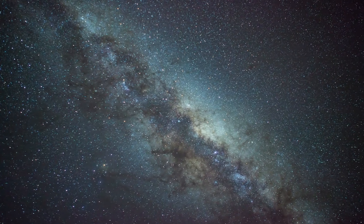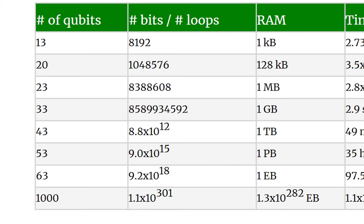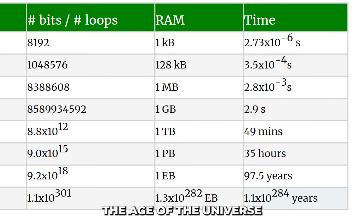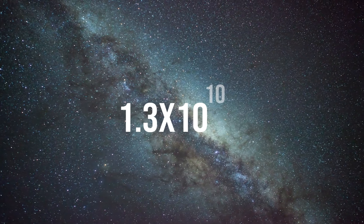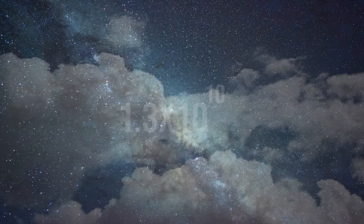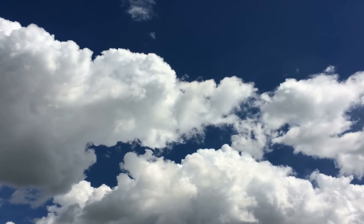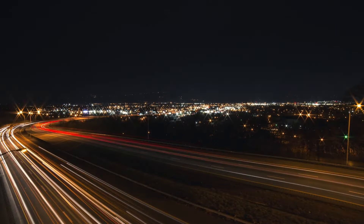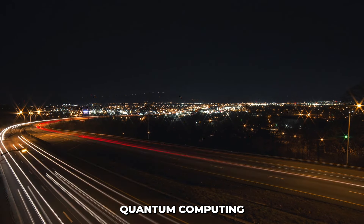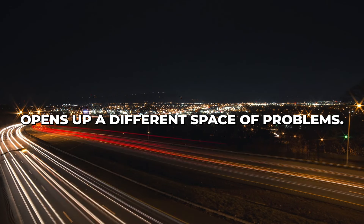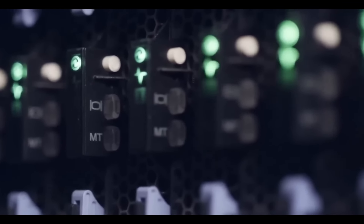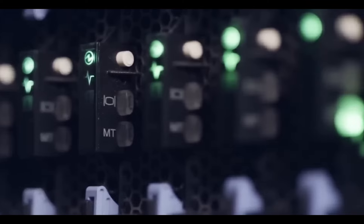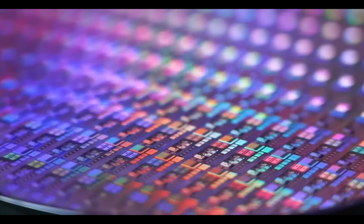Operations on 1000 qubits would take 10 to the power of 284 years to simulate. The age of the universe is estimated at 13 billion — 1.3 times 10 to the power of 10 years. Hence, we would need to wait 10 to the power of 274 times the universe's current age to achieve that. Clearly, this isn't just a convenient speed-up — quantum computing opens up a different space of problems, and 1000 qubits aren't where the train stops.